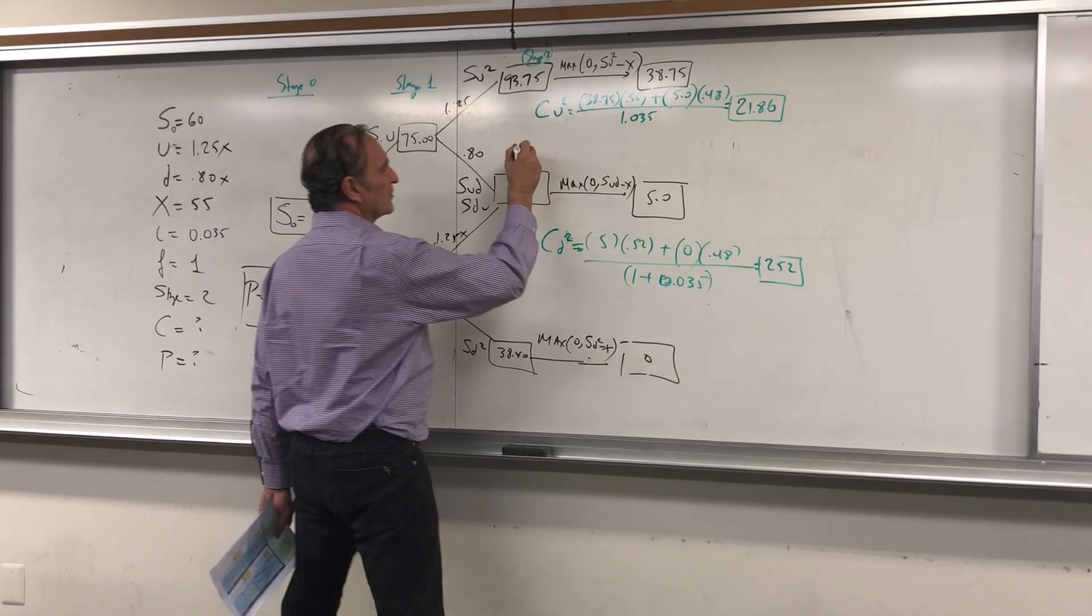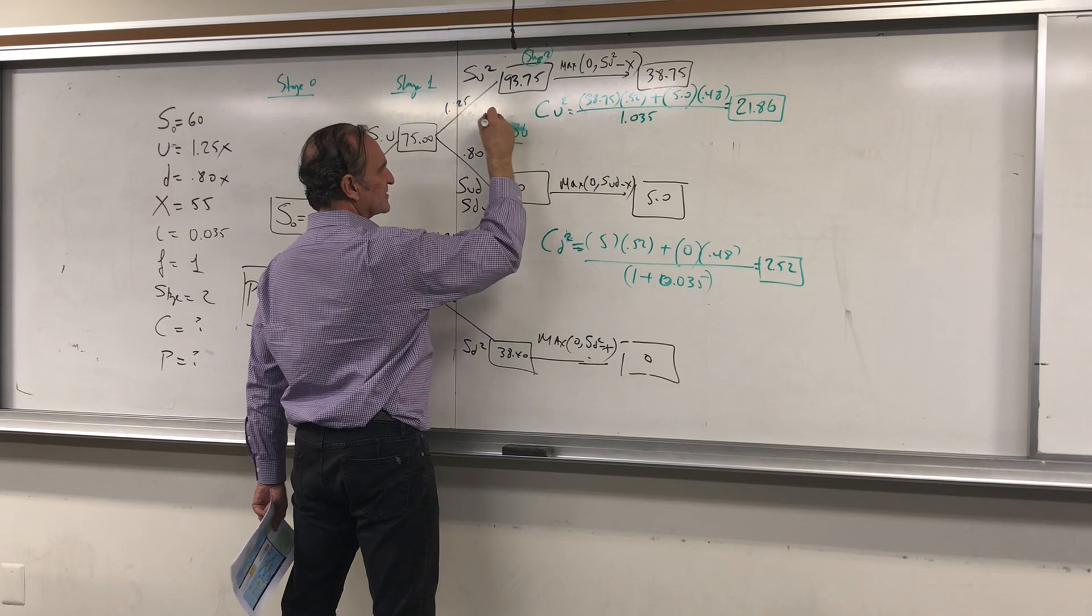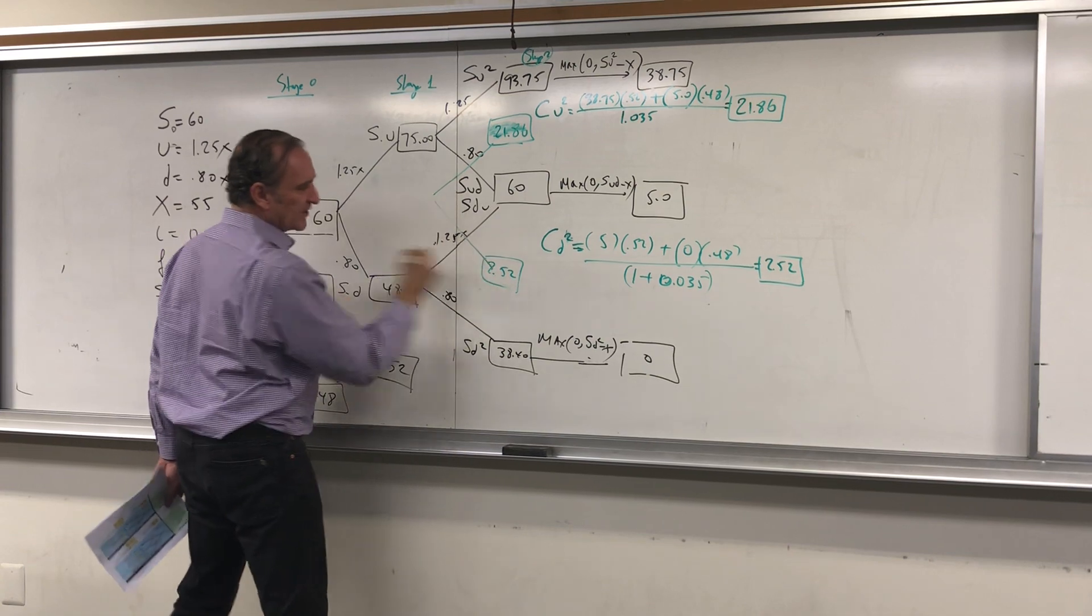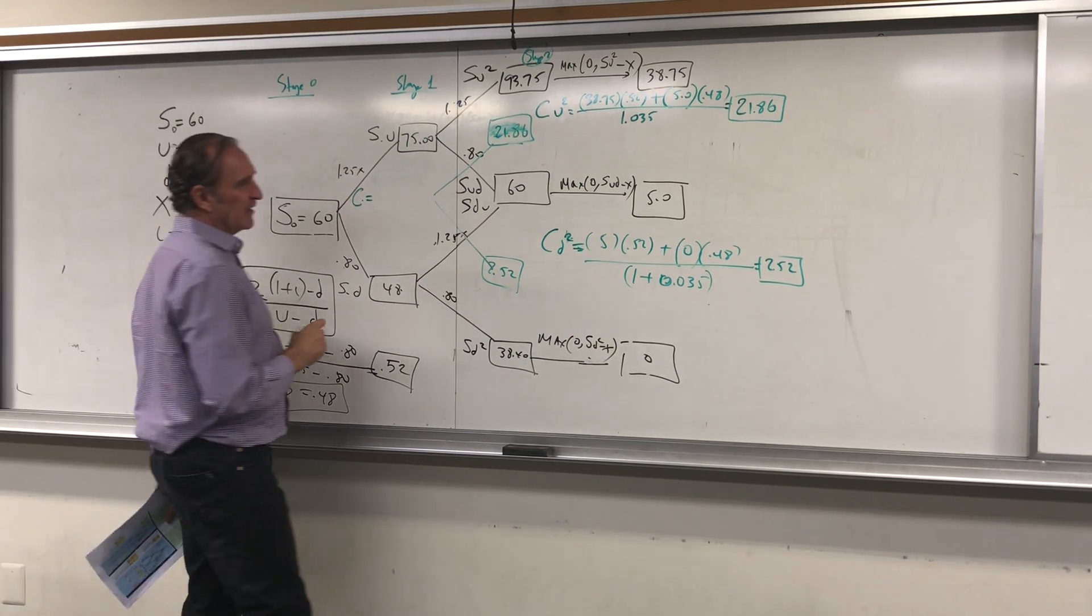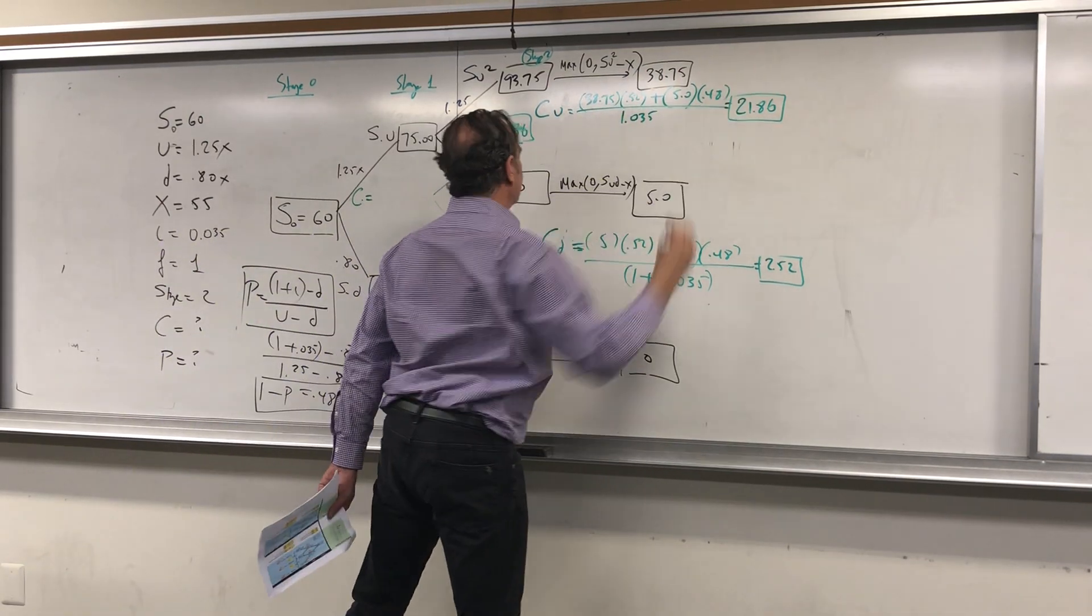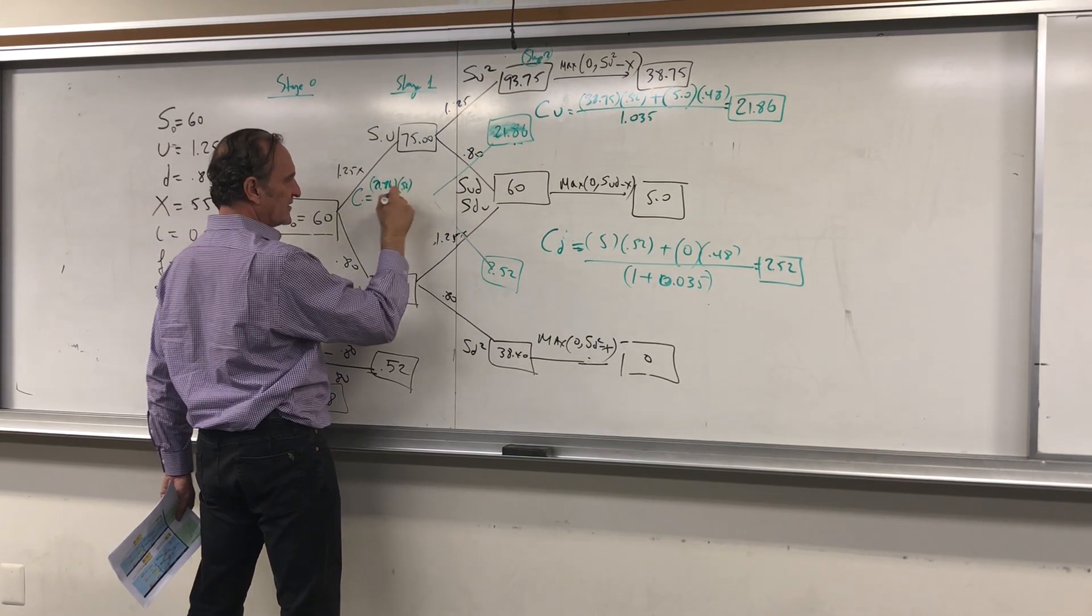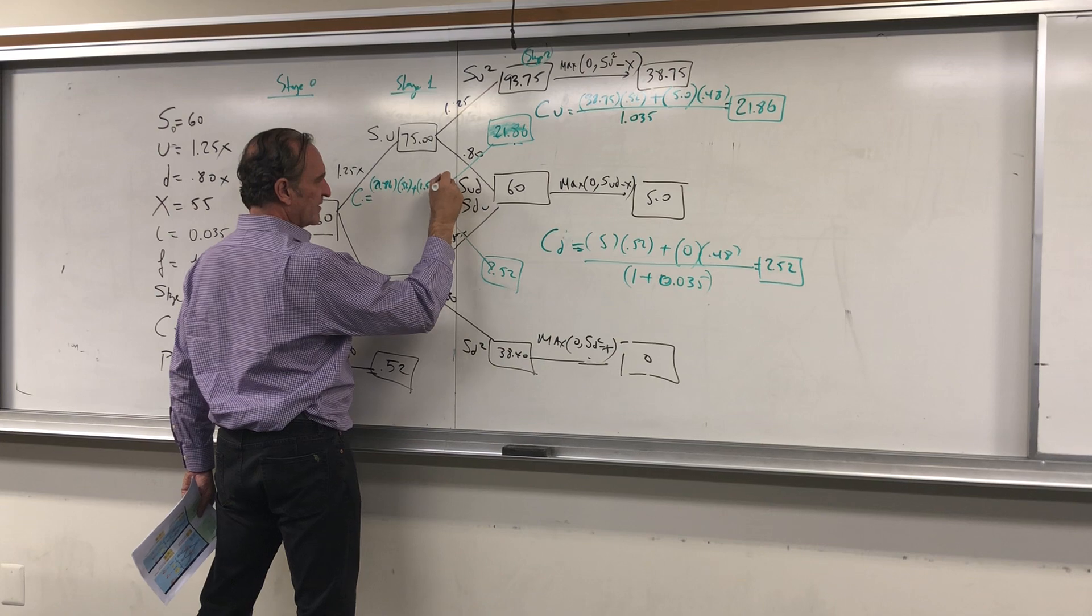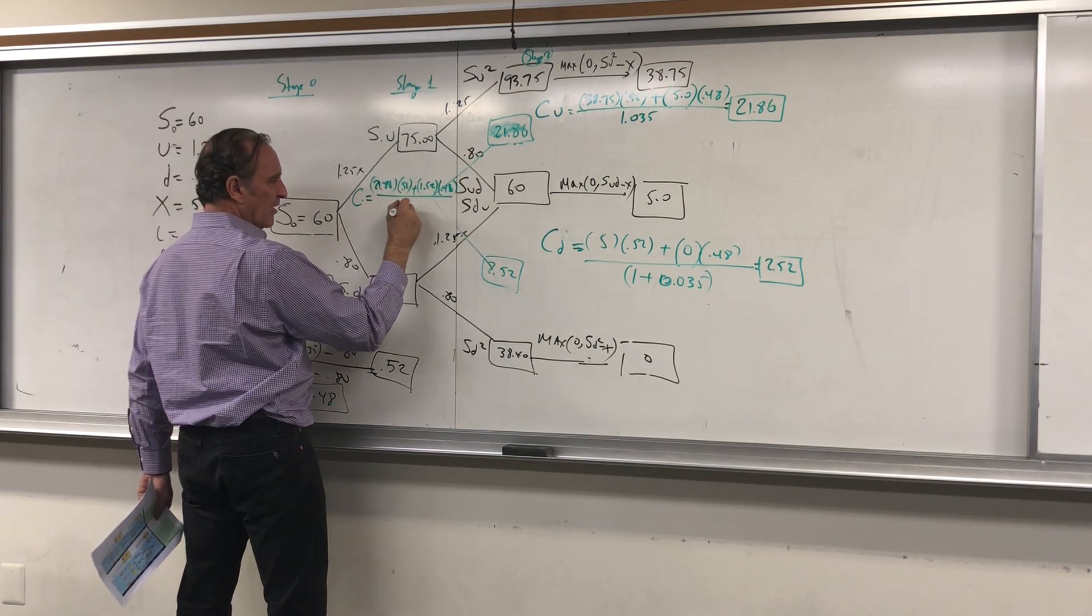Then what you do—so this is, I'm going to put it right here, $2.52 and $21.86—you brought it one stage back. Now we're going to calculate the call option here. Call option is actually C_u, call option one period back, because you brought one back, right? Call option used back here. So now we're going to calculate the call option, so I get 21.86 times 52% again plus 2.52 times 48%, and one stage back from here, divided by 1.035. So the call option calculation is $12.19.